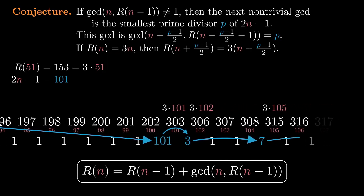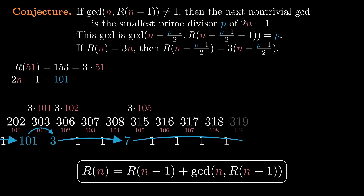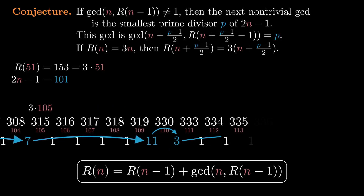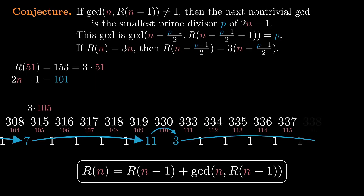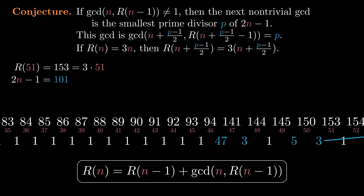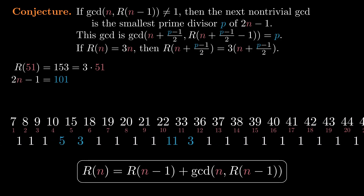This third part of the conjecture will let us consistently write R(n) in terms of n, which in turn will let us determine that the next non-trivial GCD is the smallest prime divisor of 2n minus 1. So let's see why this conjecture is true. Let's think recursively — or inductively, if you're a mathematician. If we go back to the beginning of the sequence, the first GCD that isn't 1 appears at index 5. R(5) is 15, which is 3 times 5. So at that point we're in a situation where R(n) equals 3n.